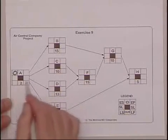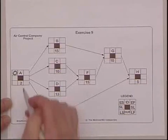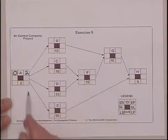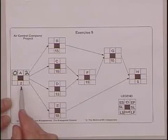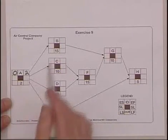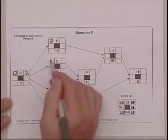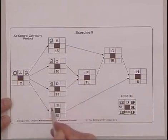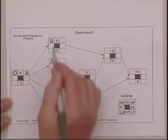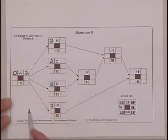So now we simply add and move, do what the text calls the forward paths. And so the earliest at activity A, if it takes two days, it will be done on the second day. That's the earliest it can be done. Then B can start once A is done. So can C, so can D, and so can E. The earliest start is the early finish for the preceding activity.